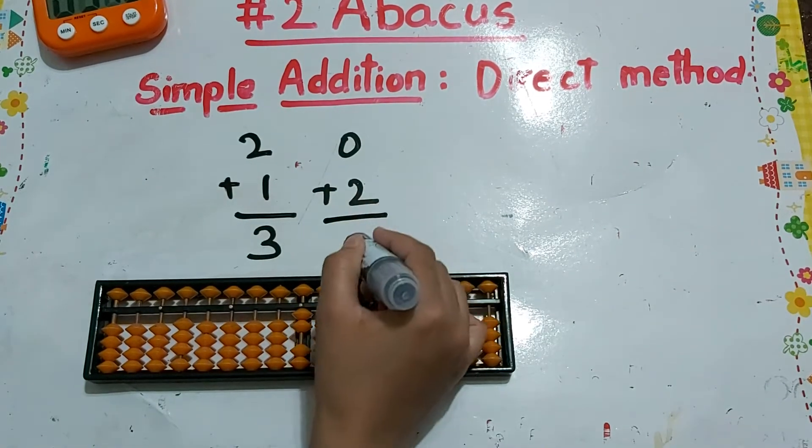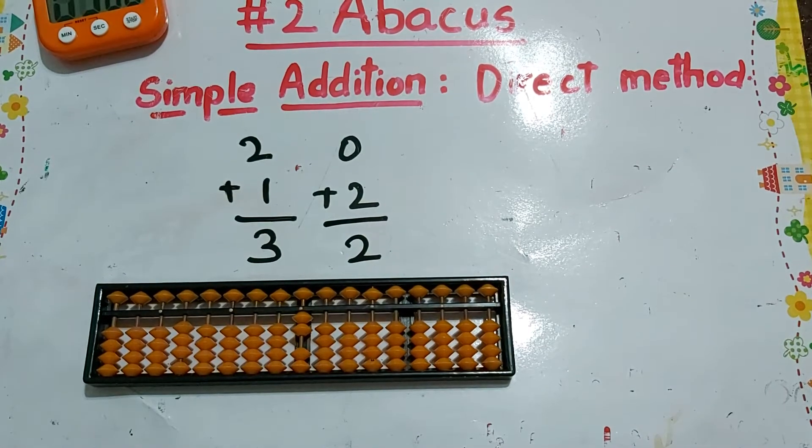Let's see some simple direct problems. 2 plus 1, the answer is 3. Next one, 0 plus 2. 0 means nothing, so we have to keep all the beads in the respective position. Then bring up 2, so the answer is 2. Next one, 0 plus 1. The answer is whatever beads are touching the reckoning bar.